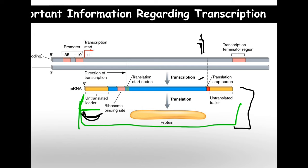In bacteria, that leader sequence includes a region called the Shine-Dalgarno sequence. It plays a critical role when we're talking about making proteins — to actually initiate that translational process, which we'll talk about in a future video.